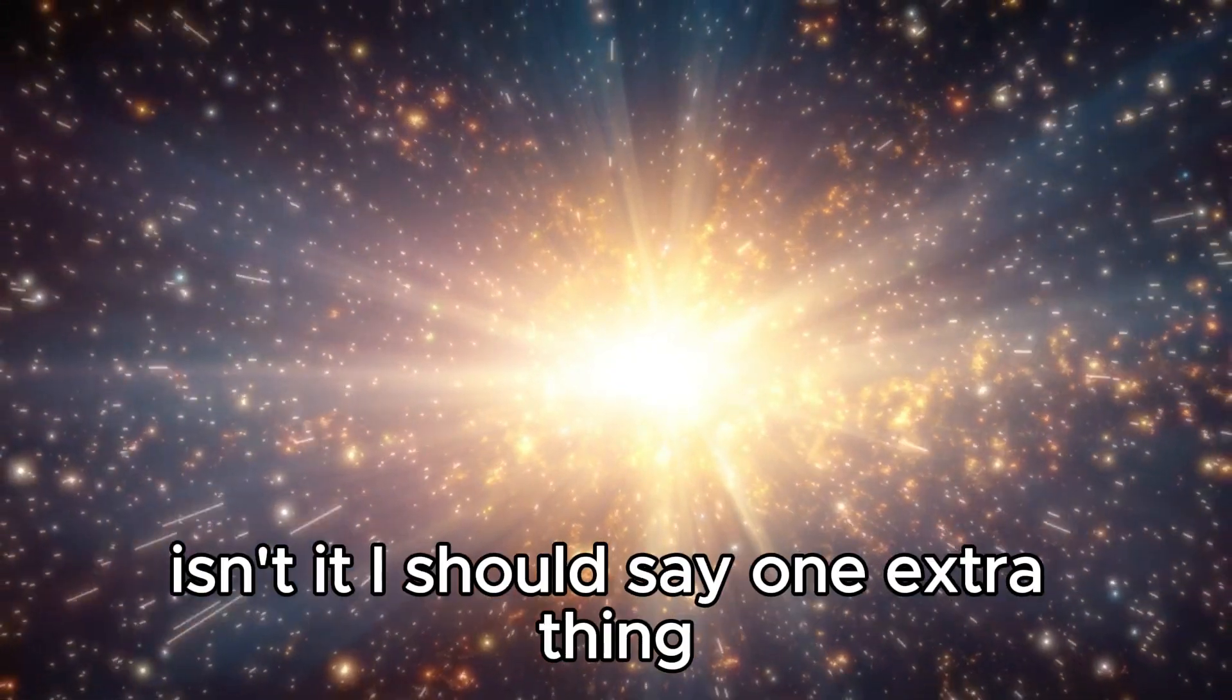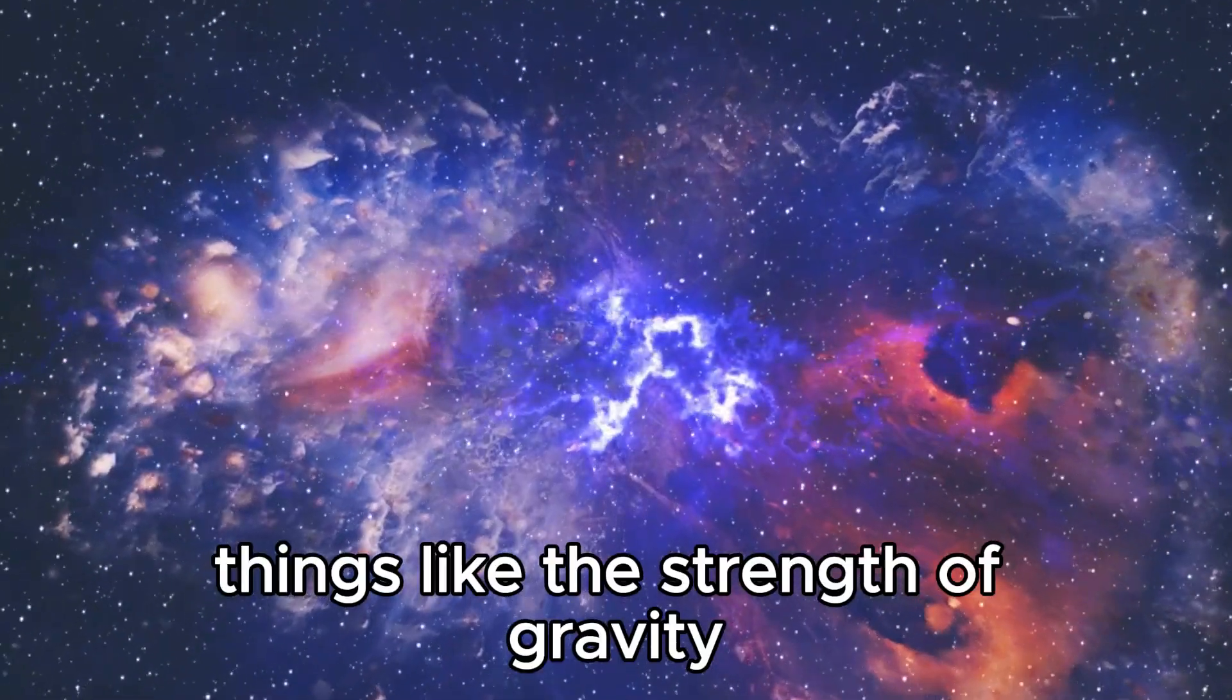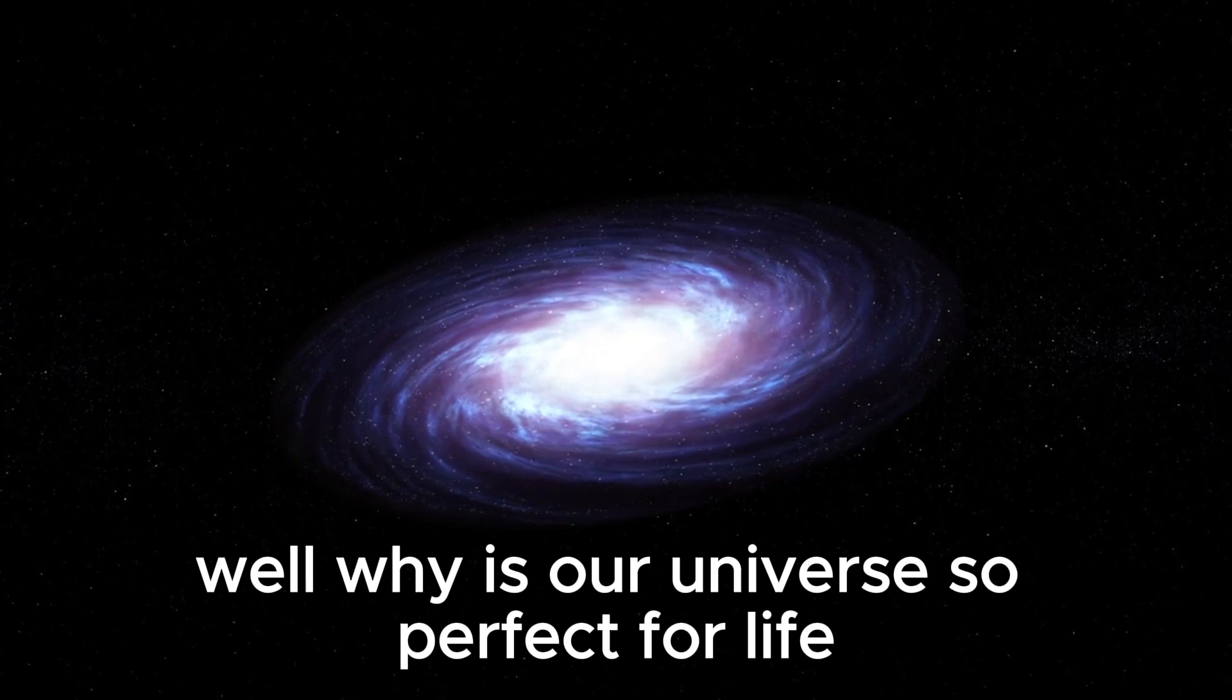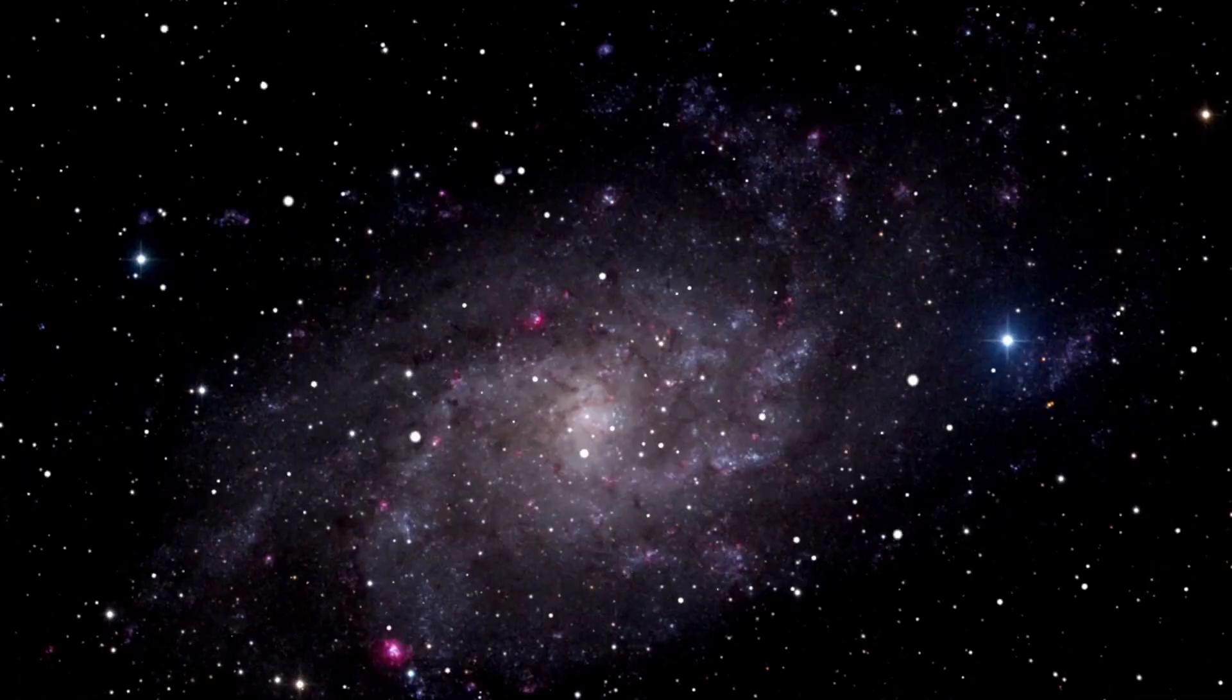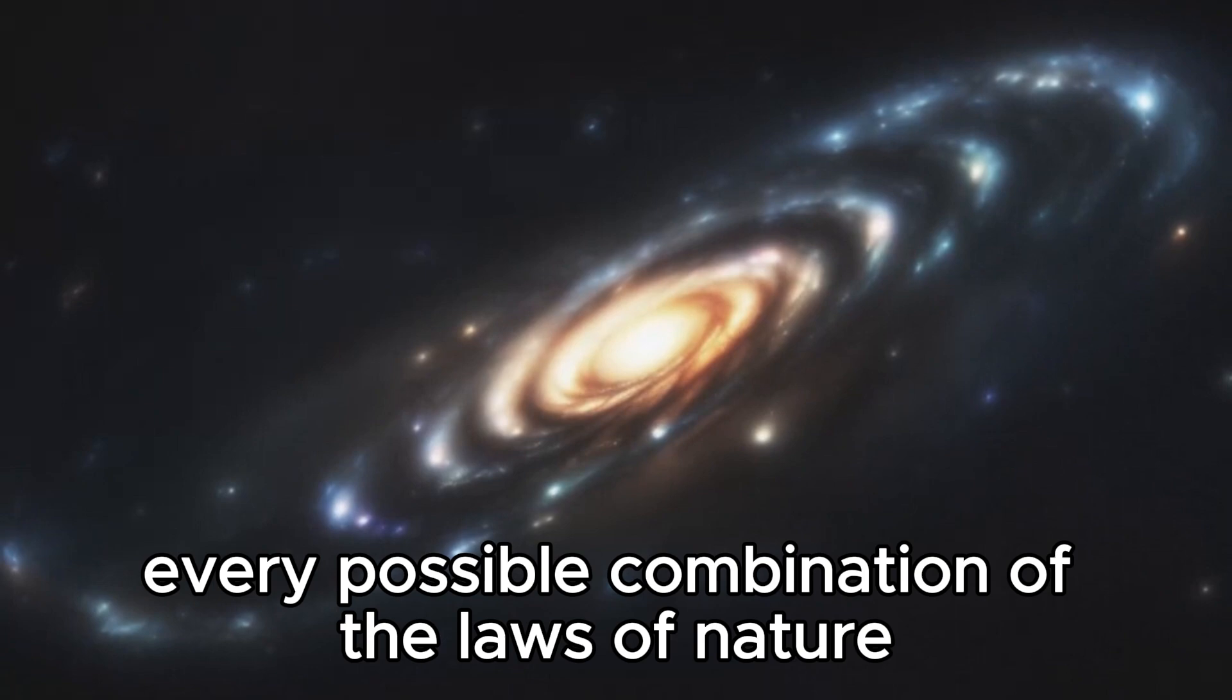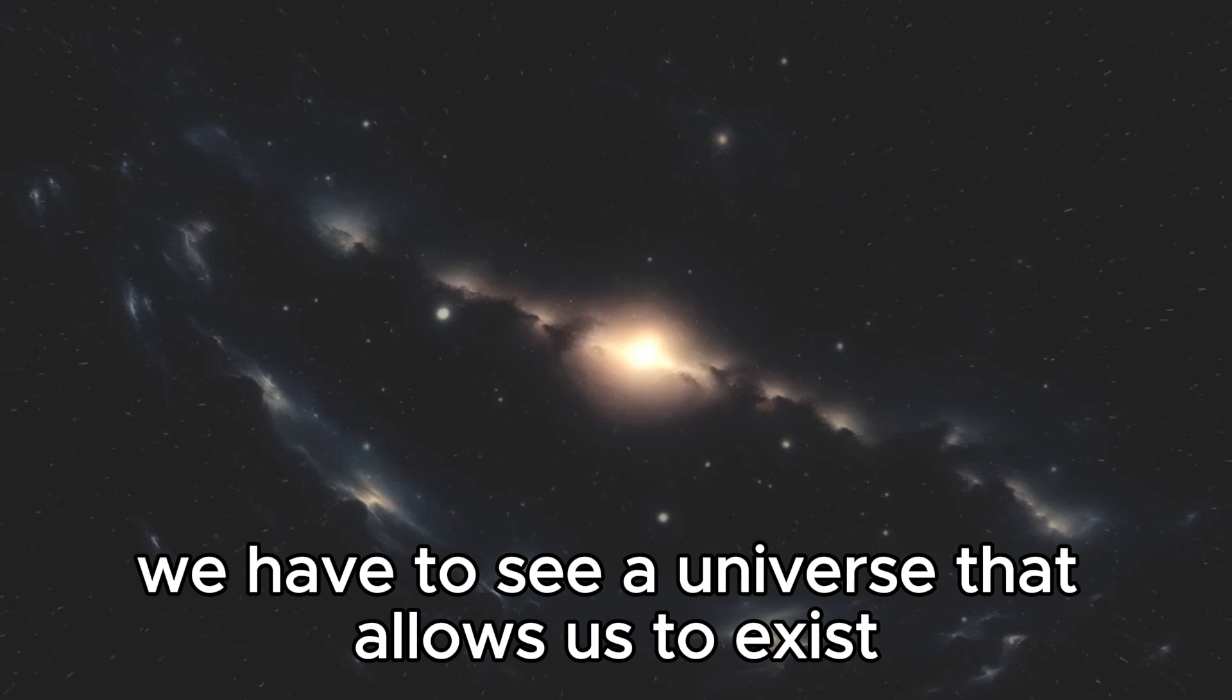It's a mind-boggling idea, isn't it? If that's true, then some theories say that what we call the constants of nature, things like the strength of gravity, the speed of light, the masses of the particles, can vary from universe to universe. Then you ask, why is our universe so perfect for life? Why do stars make carbon and oxygen, the elements you need for life? Why is everything so beautifully balanced so that living things can exist? The answer is because every universe exists, every possible combination of the laws of nature exists in different universes. The reason we see a universe that allows us to exist is obviously because we have to see a universe that allows us to exist.